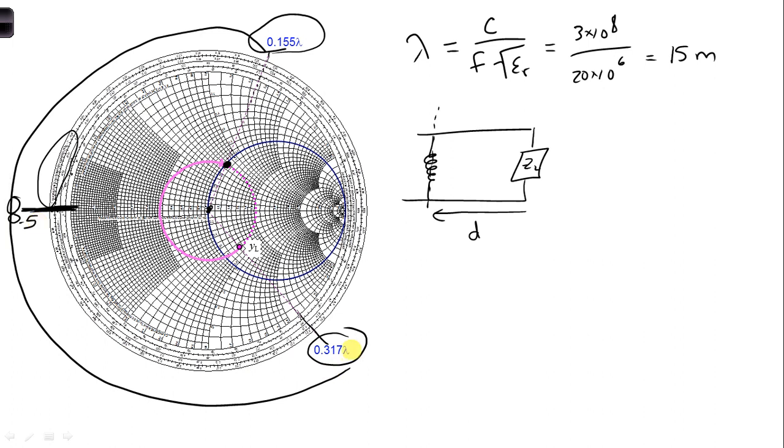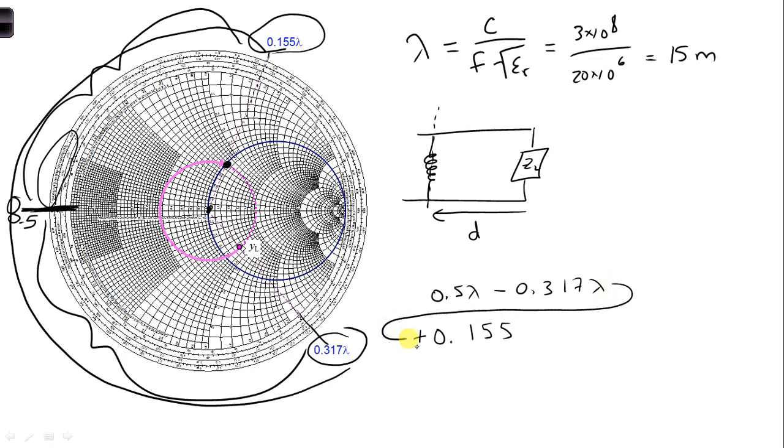So that means that we need to break this up into two parts. So we can take, for this first segment, we can take 0.5 lambda and subtract 0.317 lambda. And then for the second segment, we need to add that on. So it starts at 0 and it ends at 0.155. So that means that we need to add on, plus 0.155 lambda.